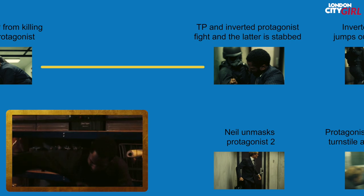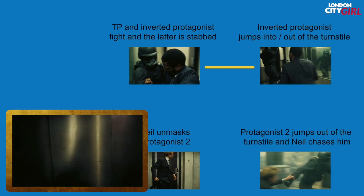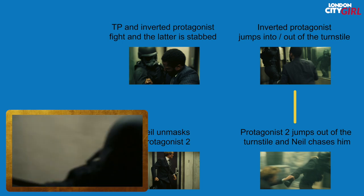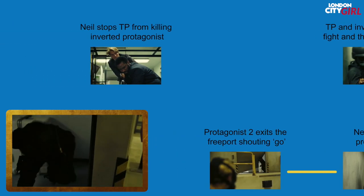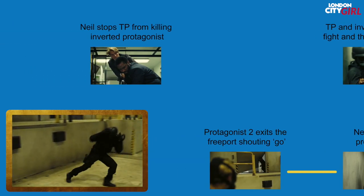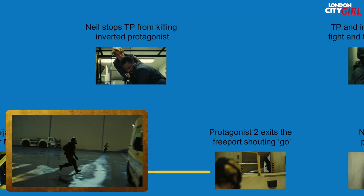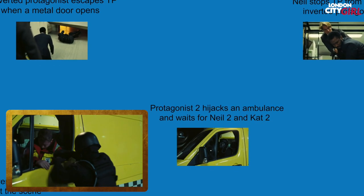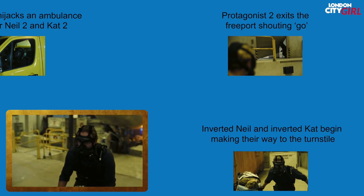This wound has been developing for the inverted protagonist as he has been journeying to the Freeport. After the inverted protagonist enters the turnstile, he emerges as Protagonist 2, who starts to experience things in the forward timeline again. After he is unmasked by Neil, he runs out of the Freeport and shouts 'go' to the waiting inverted Neil, who sees this backwards as he is experiencing this in the opposite direction. Protagonist 2 then gets an ambulance and waits for a reverted Neil and a reverted Cat to join him.